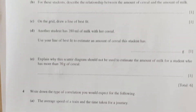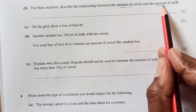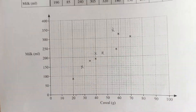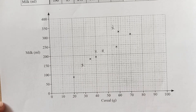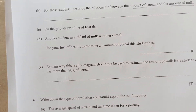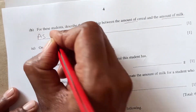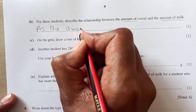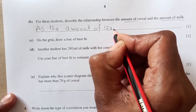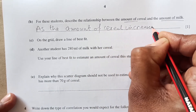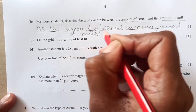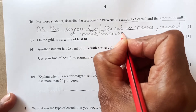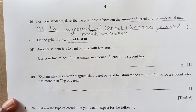Describe the relationship between the amount of cereal and amount of milk for these students. Looking at the graph, as the amount of cereal increases, the amount of milk also increases. We write: as the amount of cereal increases, the amount of milk increases — they are directly proportional to each other. Now draw a line of best fit.